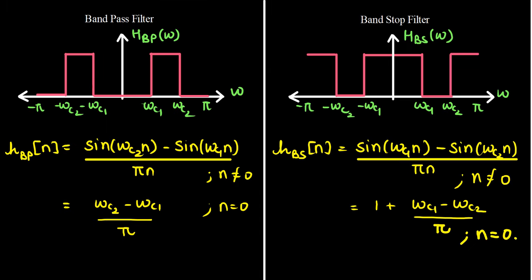The band pass filter passes only a particular band of frequencies from omega_c1 to omega_c2. Its time domain equivalent is h_bp = [sin(omega_c2 * n) - sin(omega_c1 * n)] / (pi * n) for n not equal to 0, and it is equal to (omega_c2 - omega_c1) / pi for n equal to 0.